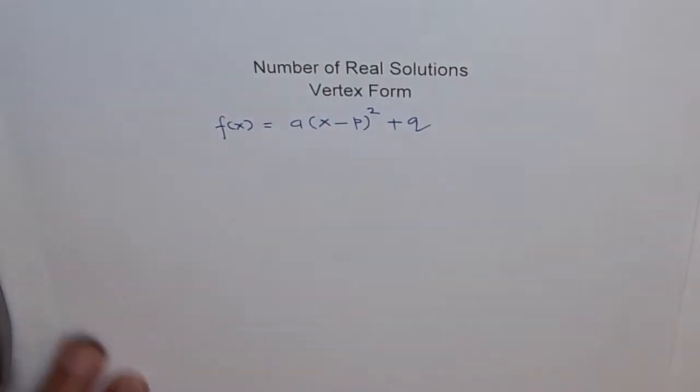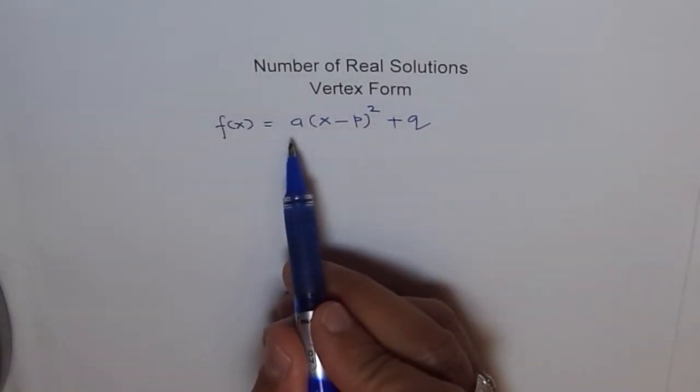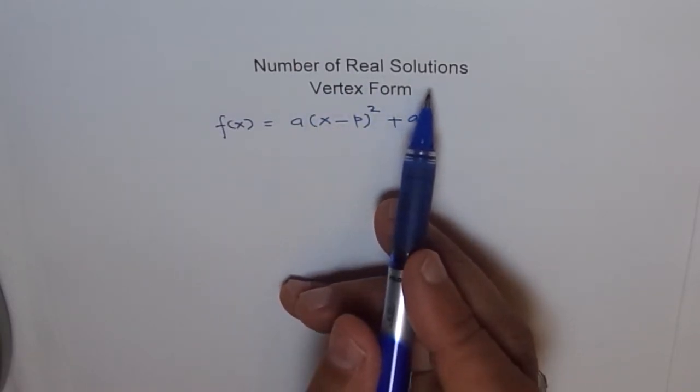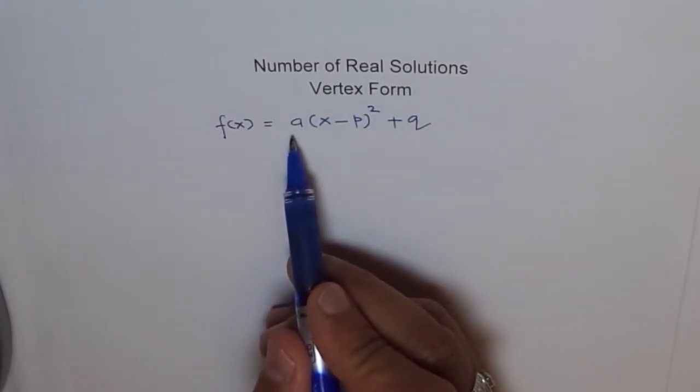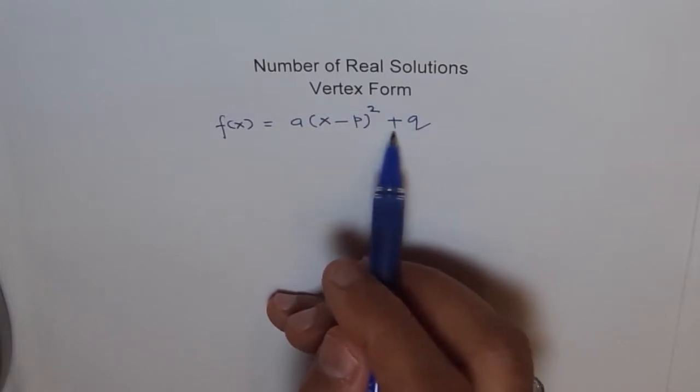So this is the vertex form. Here, a gives you the vertical stretch and most important here, when we are talking about real solutions, we will mainly be concerned with a, whether it is positive or negative, the sign of a. And this q is giving you the vertex position, y value. So we will also consider the sign of q.